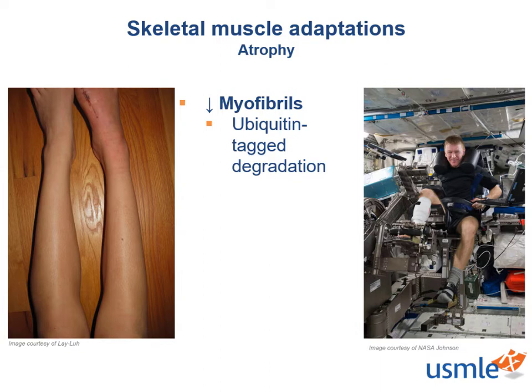Atrophy often happens due to the lack of input that comes in many different ways, like immobility. Remember that bone break as a kid? A cast is a perfect example of what we see on the left, in addition to aging, malnutrition, or neurological disease. Another instance is the lack of resistance or weight-bearing that we see in our astronauts. In space, our muscles are not subjected to gravitational forces, so it's common to see muscle atrophy in astronauts who spend a prolonged amount of time in space.